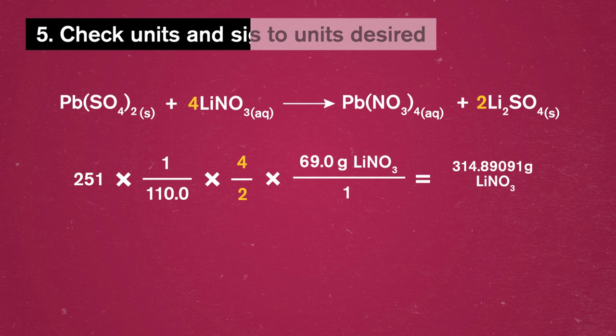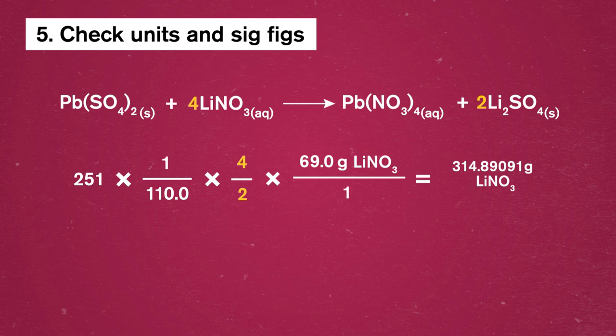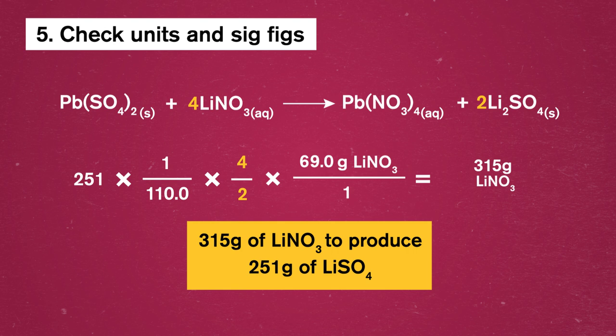Our last step is to check that these are the units we want, and represent the final answer in correct sig figs, which in this case would be three. Our final answer is that it would take 315 grams of lithium nitrate to produce 251 grams of lithium sulfate in this reaction.